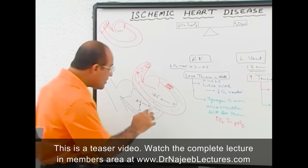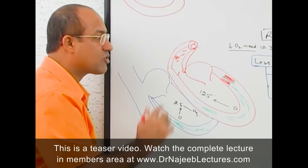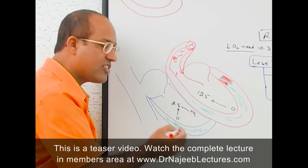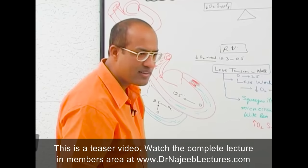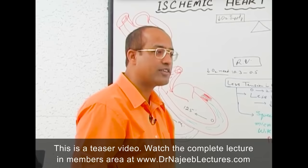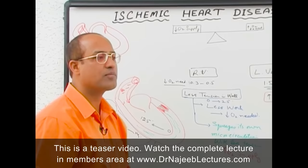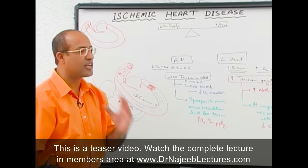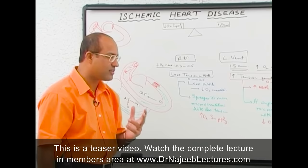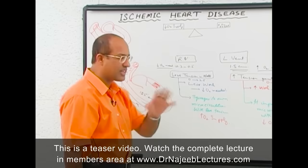The left ventricle needs more oxygen but unfortunately impedes its own circulation more effectively. That is why in 98–99% of cases when we talk about ischemic heart disease, we are talking about the myocardium of the left ventricle. Only 1–2% of cases involve right ventricular ischemia, especially when there is right ventricular hypertrophy — such as in cor pulmonale or pulmonary hypertension.